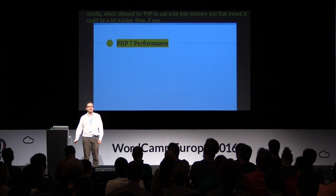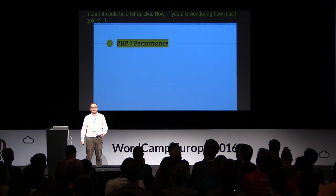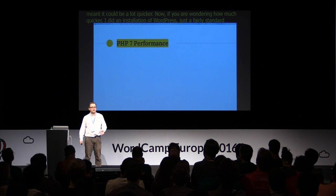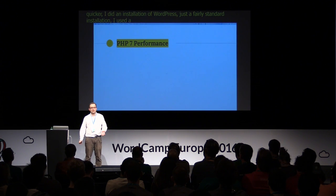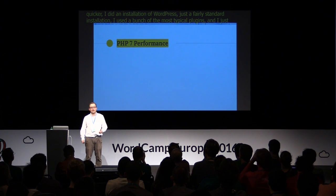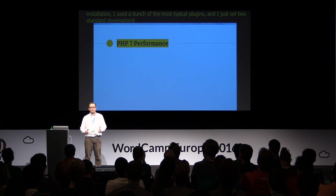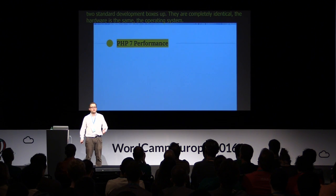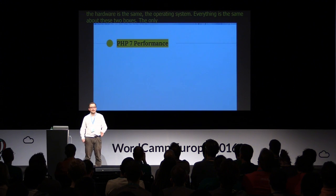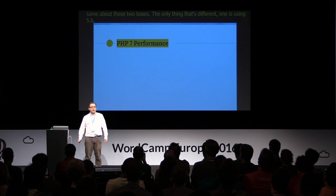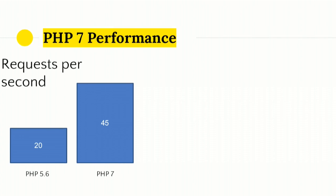If you're wondering how much quicker: I did an installation of WordPress, just a fairly standard installation. I used a bunch of the most typical plugins, so Yoast and contact forms, that kind of thing. I set two standard development boxes up — they're completely identical, the hardware is the same, the operating system, everything is the same about these two boxes. The only difference is one is using PHP 5.6 and the other is on PHP 7. What I found was that on requests per second, I could get around 20 out of PHP 5.6, but around 45 requests per second on PHP 7.